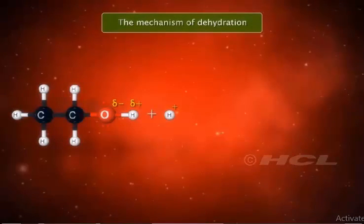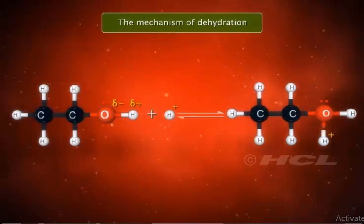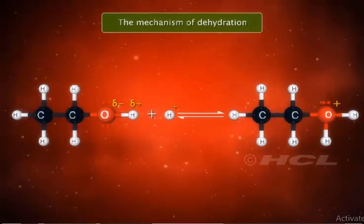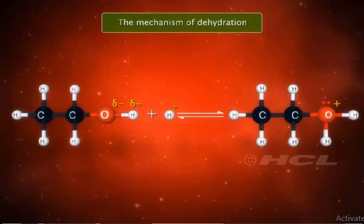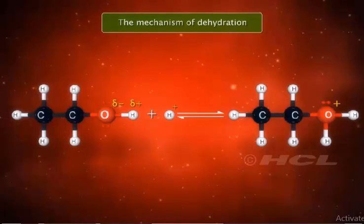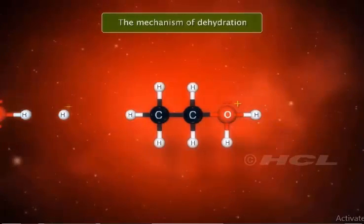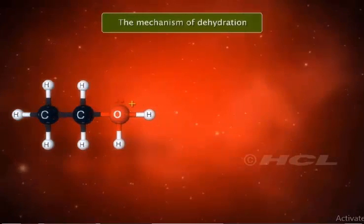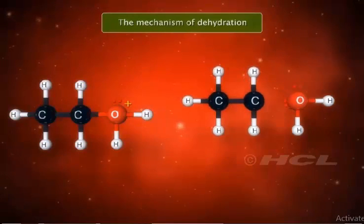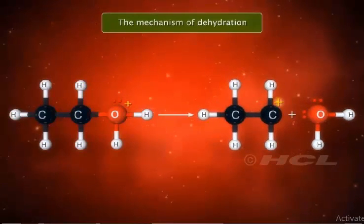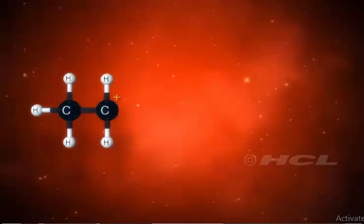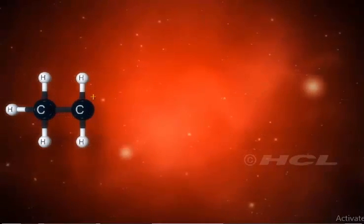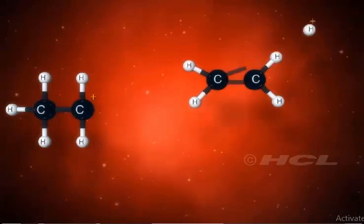A series of steps is involved in the mechanism of dehydration of alcohols. The acid protonates the alcohol on oxygen; this process is usually reversible. In the second step, the protonated alcohol loses water to give a carbocation. Finally, the carbocation loses a proton to give the alkene.